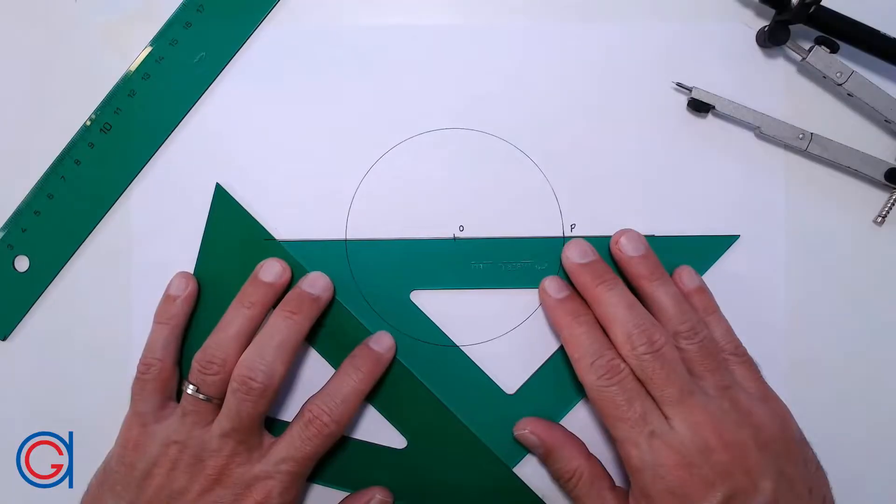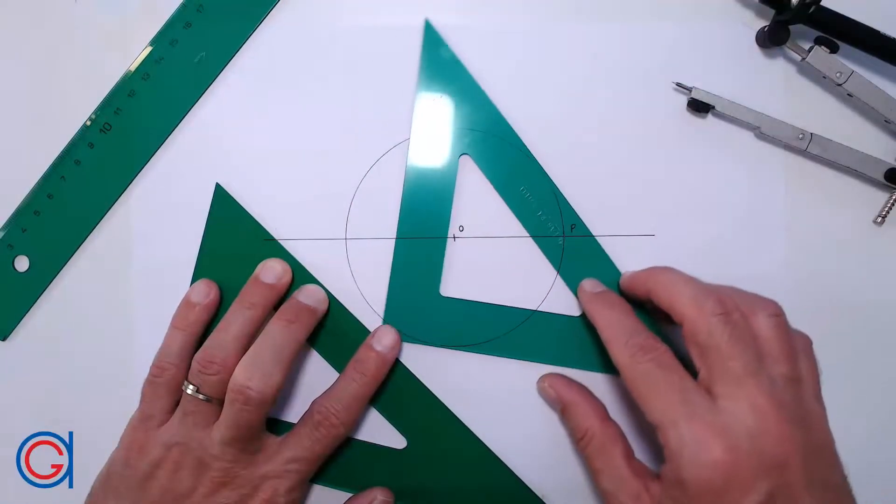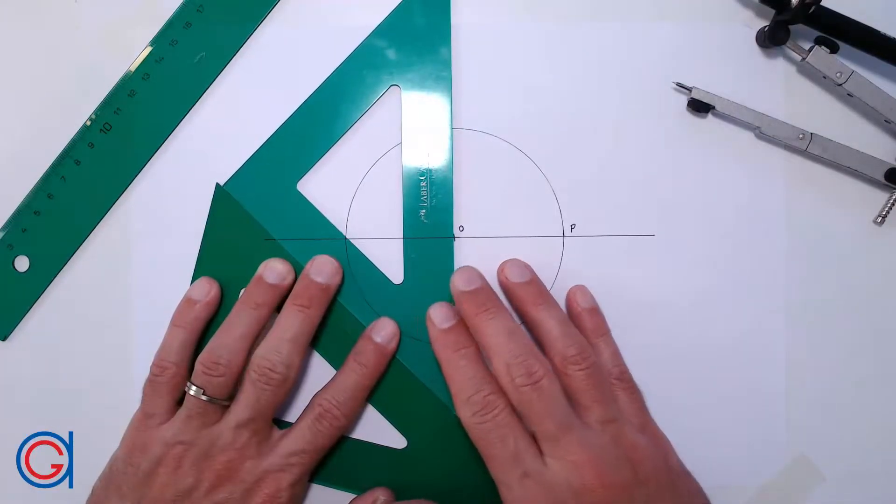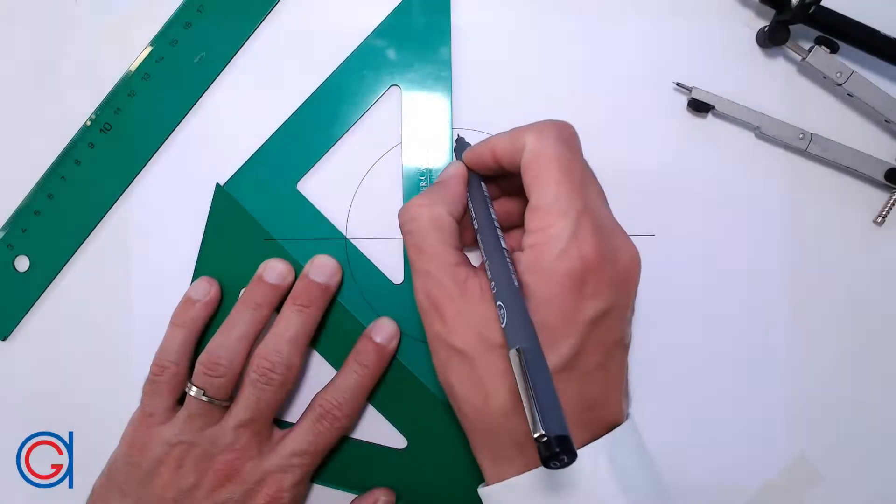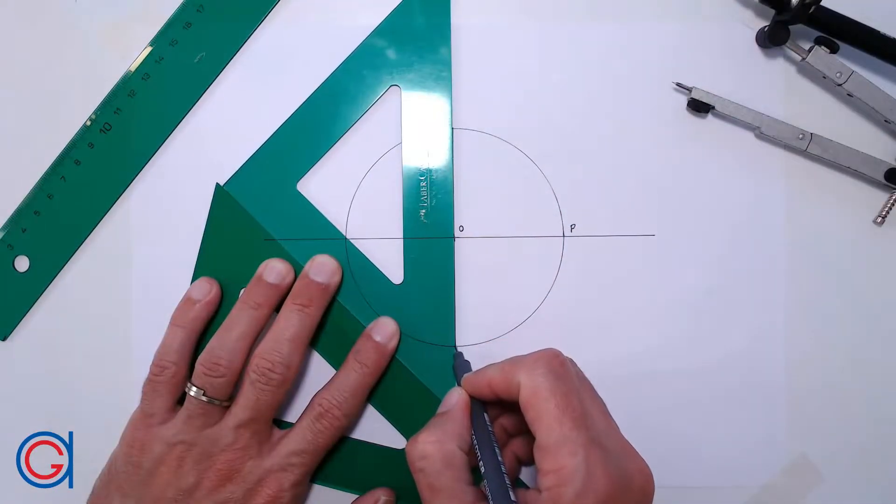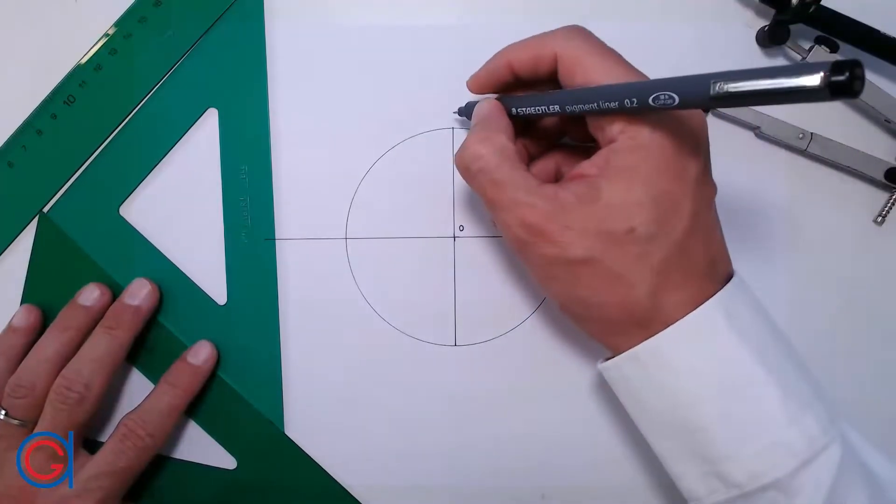So the next step is to draw a perpendicular vertical diameter, which cuts our circumference at points A and Q, as can be seen here in the video. We do this using our 45 degree and 60 degree set squares.